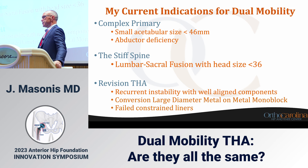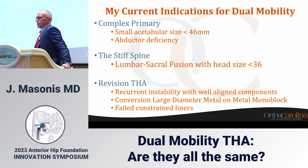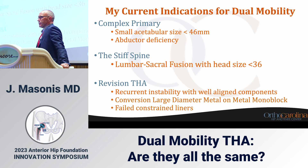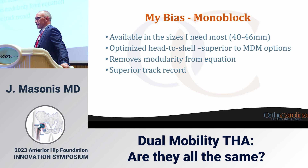My current indications for dual mobility: a complex primary with an acetabulum less than 46mm — which would otherwise put me at a 28mm articulation — a completely abductor-deficient hip such as after takedown of an arthrodesis, a stiff spine with lumbosacral fusion with head size less than 36mm, revision total hip with recurrent instability and well-aligned components, conversion of large-diameter metal-on-metal monoblocks that have failed for metallosis, and failed constrained liners.